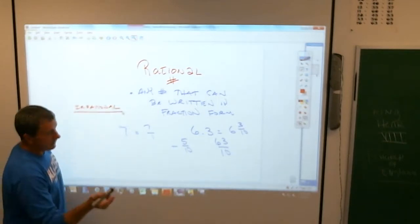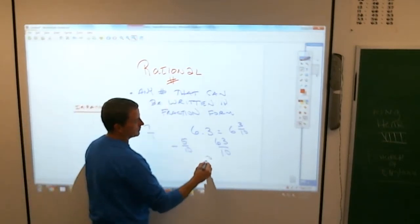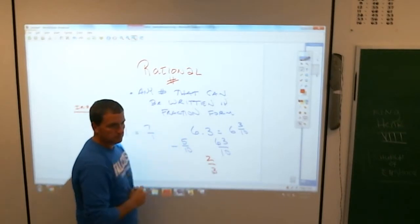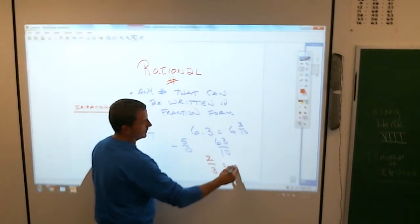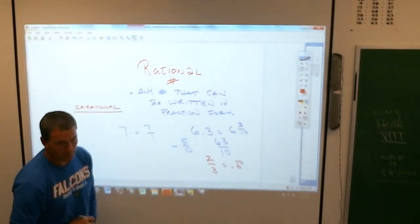Oh, by the way, it goes the other way. Two-thirds is rational, right? It's a fraction. What is the decimal equivalent of two-thirds? 0.6666. It's 0.6 repeater. We put that little repeater line over there.